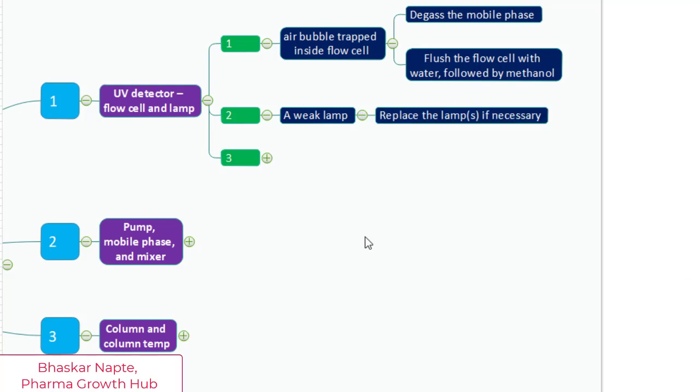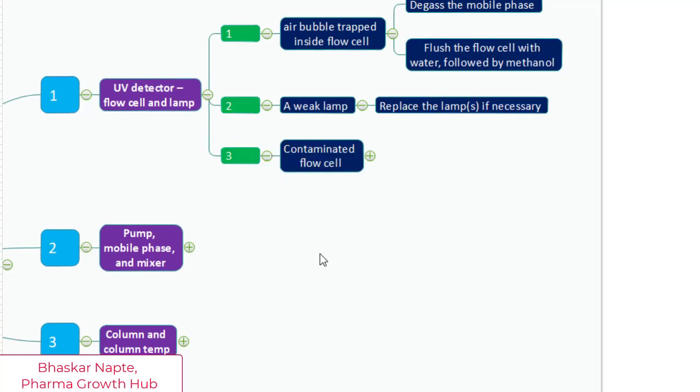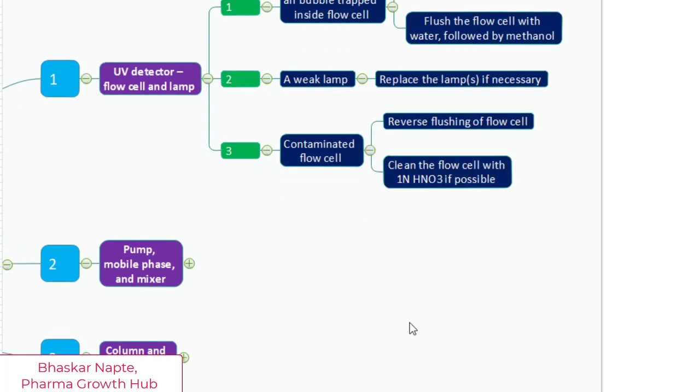The third point is contaminated flow cell. Reverse the flow cell by altering connection and flush the flow cell with a strong solvent. This trick can also be used to remove trapped air bubbles. But if the dirt is not removed completely,